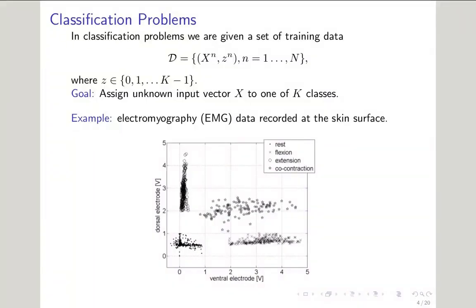Here's another example of the classification problem as seen with EMG data. Here we have two electrodes attached to the skin on the dorsal and the ventral side of an appendage, such as the lower arm or the upper arm or the lower leg. With this data, we're trying to classify the continuous signals we get from the sensors into one of four actions for the appendage: whether it's rest, flexion, extension, or co-contraction.